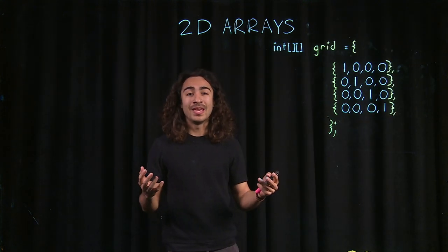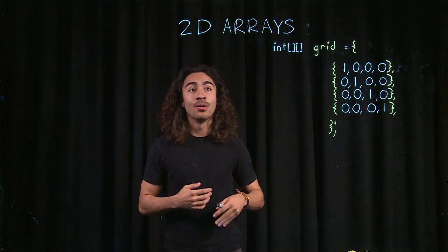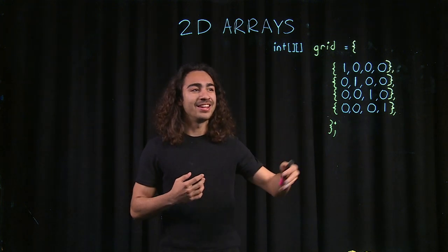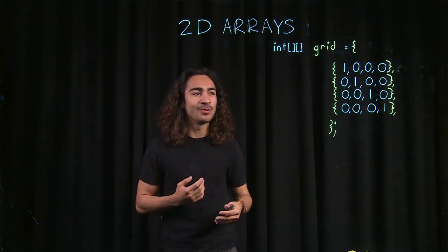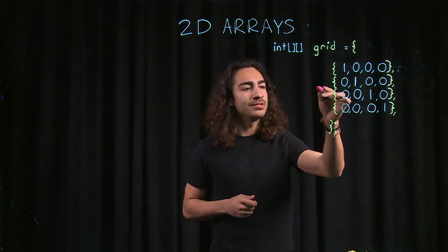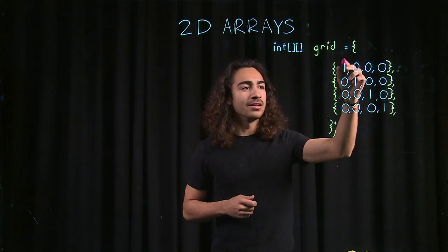So, now that we know how to make 2D arrays, let's look at it a little bit differently. Here, I have my grid two-dimensional array, and I call it grid because I see 2D arrays a lot like grids. As you can see, we have rows, and we have columns, and we can number them.